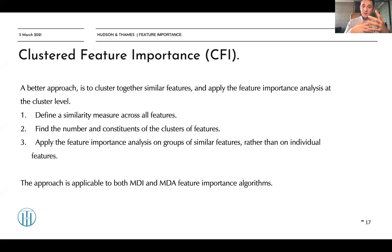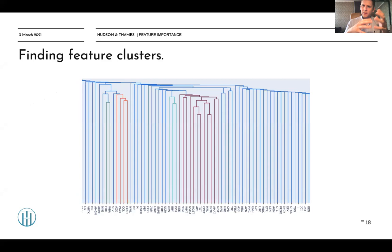This approach is applicable to both MDI and MDA feature importance algorithms. So how can we find feature clusters? One of the ways is to apply an agglomerative clustering algorithm on top of the correlation matrix of our features to find the feature clusters.